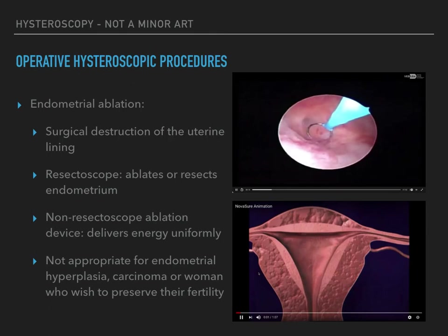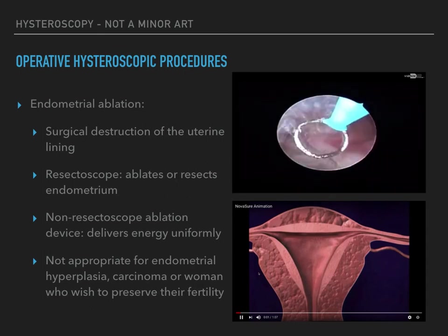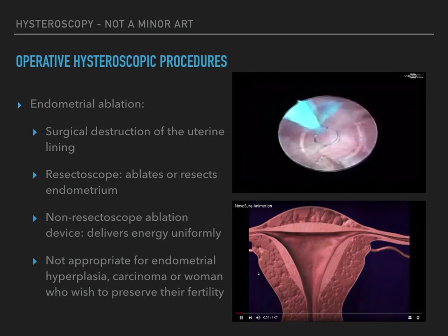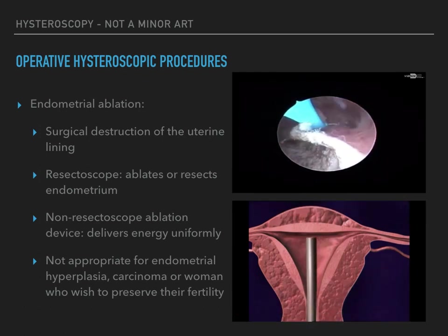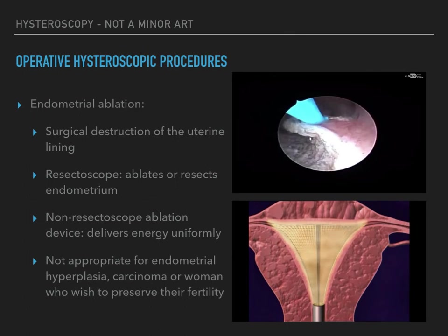Firstly, endometrial ablation. It is the surgical destruction of the uterine lining and can be accomplished under hysteroscopic visualization using resectoscopic instruments to ablate or resect the endometrium, or with a non-resectoscopic ablation device, which is inserted into the endometrial cavity and delivers energy to uniformly destroy the uterine lining. Non-resectoscopic endometrial ablation techniques are more widely practiced than resectoscopic ablation, since they require less specialized training and often have shorter operative time.